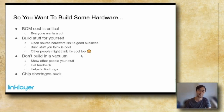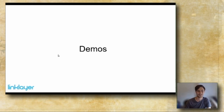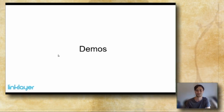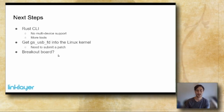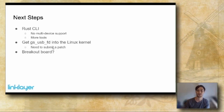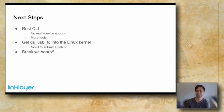Chip shortages suck — right now we're in a really big one, so it's hard to find parts for a lot of things, but hopefully we'll get out of it soon. The demos I planned are unfortunately cut for time, but you can check out the GitHub repository for CANTAC which has those examples. Next steps: the Rust CLI needs some improvements and more tools, I want to get the CANFD version of the driver merged into mainline, and I want to build a breakout board so you can plug in OBD and other connectors without messing with cables.